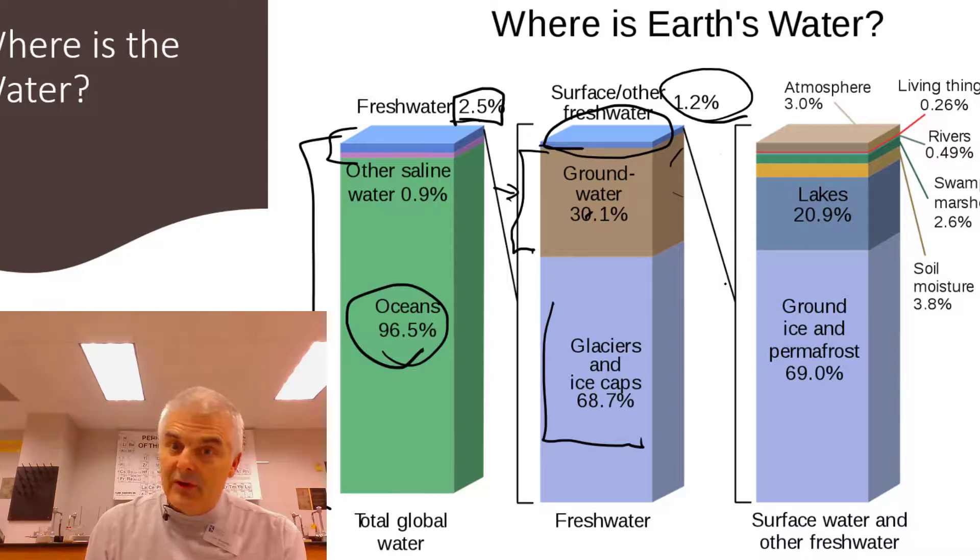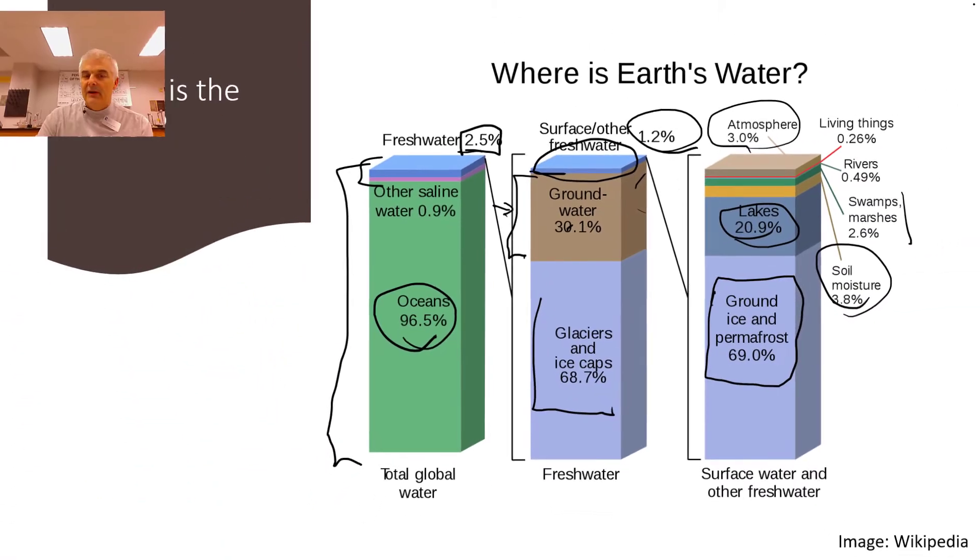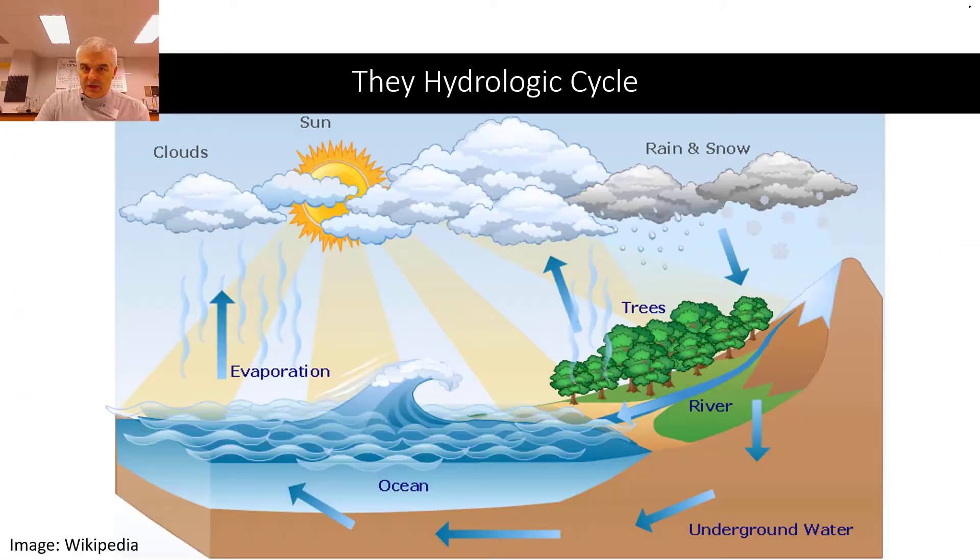If we look at all the fresh water of the earth, it's mostly ground ice and permafrost. That's water that's in soils, permafrost, like in the polar ice caps. Here's our lakes, rivers, streams, and some in the atmosphere. This is evaporated water, soil moisture. Jeez Louise, there's not a whole lot of usable fresh water in the world that we think about.